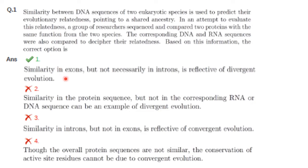Before explaining the answer, I will tell you what divergent evolution is. Divergent evolution occurs when two organisms with a common ancestor end up as two different species — that is called divergent evolution. The question states that similarity between DNA sequences of two eukaryotic species is used to predict evolutionary relatedness pointing to shared ancestry.